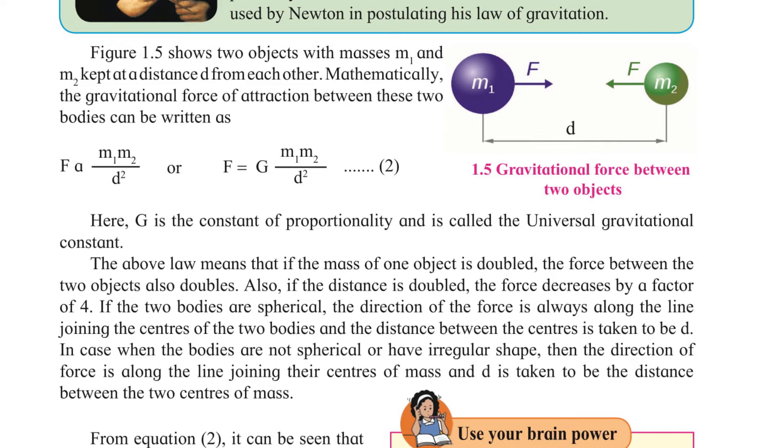The above law means that if the mass of one object is doubled, the force between the two objects also doubles. Also, if the distance is doubled, the force decreases by a factor of 4. If the two bodies are spherical, the direction of the force is always along the line joining the centers of the two bodies, and the distance between the centers is taken to be d.